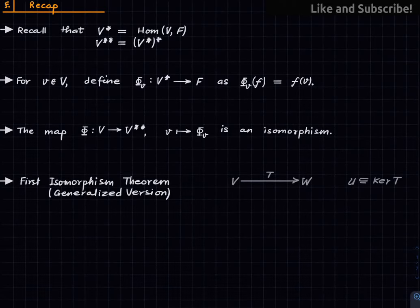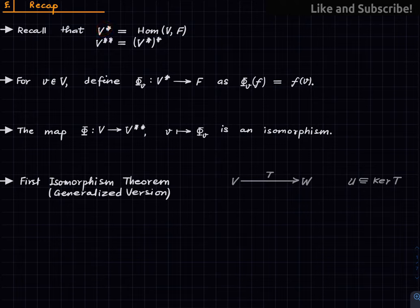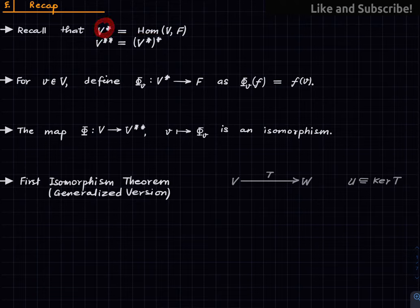Welcome to this lecture series in linear algebra. In this lecture we look at the notion of annihilators of a subspace. Recall that we defined the dual space of a vector space V as the set of all linear maps from V to the base field. This is a vector space over the base field and we can further take the dual of it. If you take the dual of the dual, this is the notation and this is the definition.